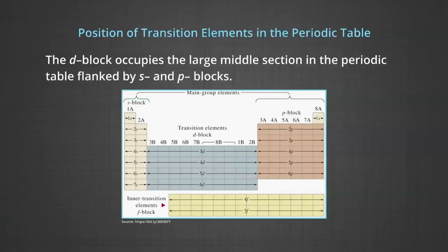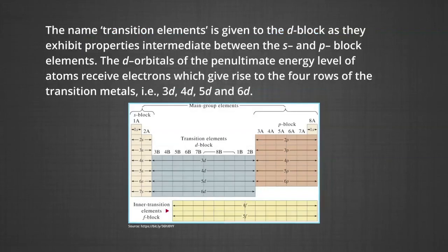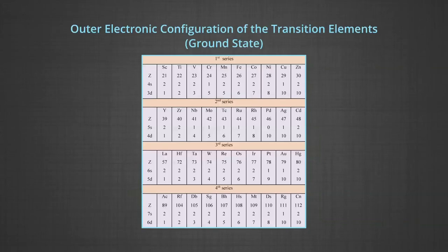The D block elements — let us first discuss their position in the periodic table. The D block occupies the large middle section in the periodic table, flanked by S and P blocks. In the image you can see the block represented in blue color, between S and P block elements. The name 'transition elements' is given to the D block as they exhibit properties intermediate between the S and P block elements. The D orbitals of the penultimate energy level receive electrons, giving rise to the 4 rows of transition metals: 3D, 4D, 5D and 6D series.